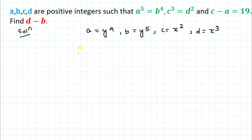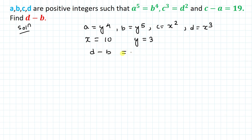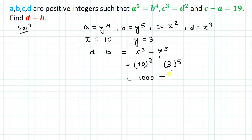We found x equals 10 and y equals plus or minus 3. Since a, b, c, d are all positive integers, y must be positive, so y equals 3. Now, d equals x cubed equals 10³ equals 1000, and b equals y to the power 5 equals 3⁵ equals 243. Therefore, d minus b equals 1000 minus 243 equals 757. I hope you have clarity on how to solve this type of question. Thanks for watching — please subscribe to my channel and hit the like button!